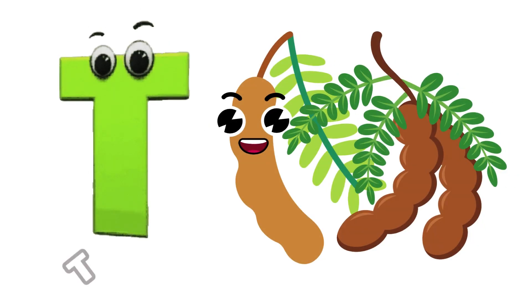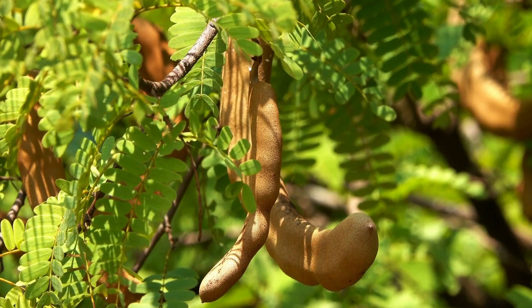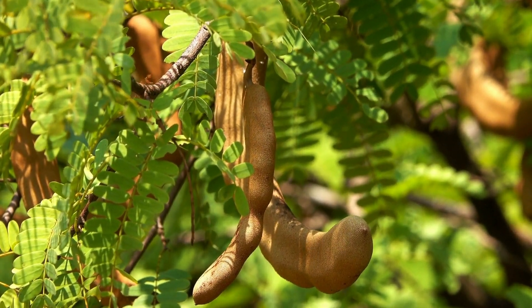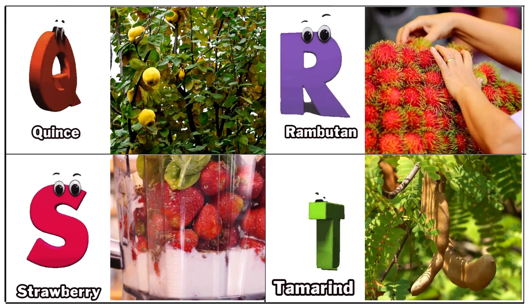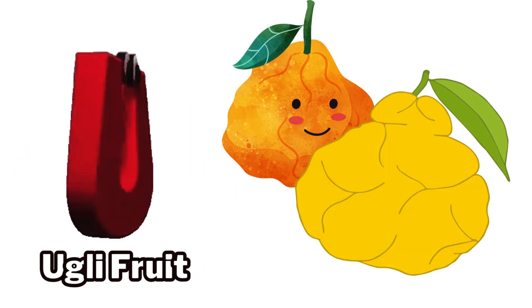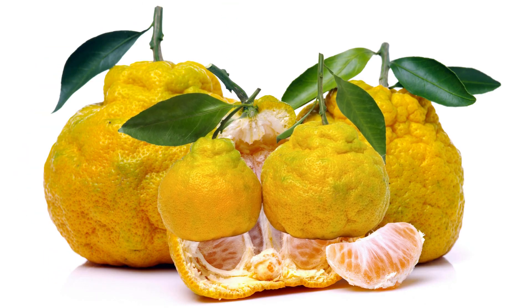T is for tamarind, ch-ch-tamarind. U is for ugly fruit, ha-ha-ugly fruit.